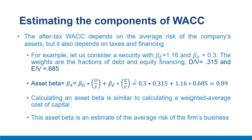Calculating the asset beta is similar to calculating a weighted average cost of capital — the debt and equity weights D/V and E/V are the same. If you purchased a portfolio of 100% of the firm's equity and 100% of its debt, you would own 100% of its assets, and the beta of your portfolio would equal the beta of those assets. This asset beta is an estimate of the average risk of a firm's business. It is a useful benchmark, but not all investments will have this same average risk. If you are among the first to use an asset class, you may have no comparable betas to start with.